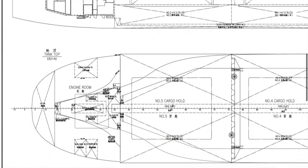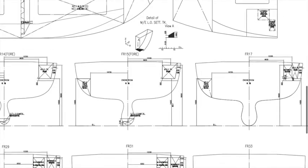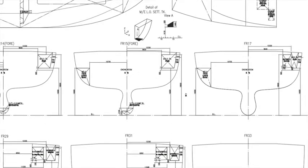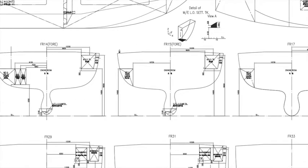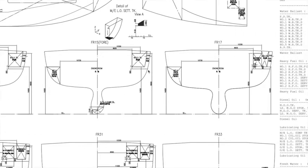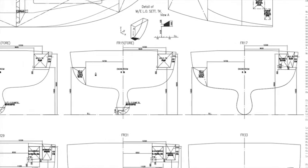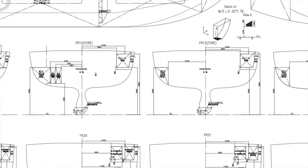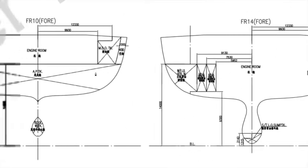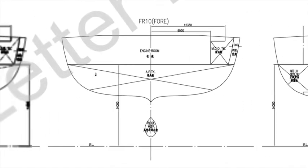A lot of plans have a transverse section view of the vessel at different important frames — for example, frame 17, frame 15, frame 14. If you imagine cutting the vessel at that particular frame, these will be the compartments you would be seeing. So at important frames, they have given us the transverse view of the various compartments.